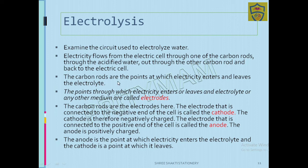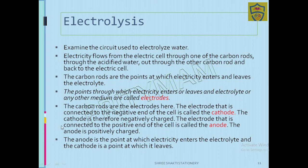The carbon rods are the points at which electricity enters and leaves the electrolyte. The points through which electricity enters or leaves an electrolyte or any other medium are called electrodes. The electrode connected to the negative end is called the cathode, and the electrode connected to the positive end is called the anode. The anode is positively charged.